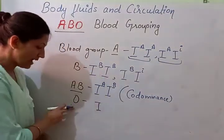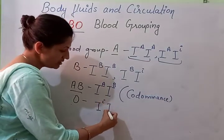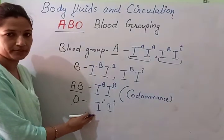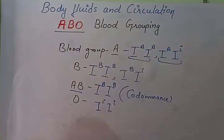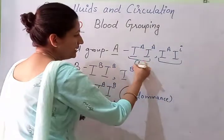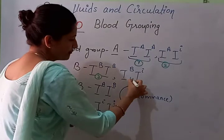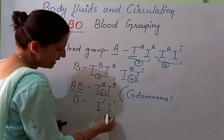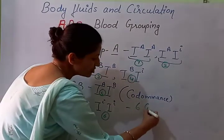To have blood group O, the genotype must be recessive, and the possible recessive genotype is i and i. So we have a total of 1, 2, 3, 4, 5, 6 — we have 6 genotypes.